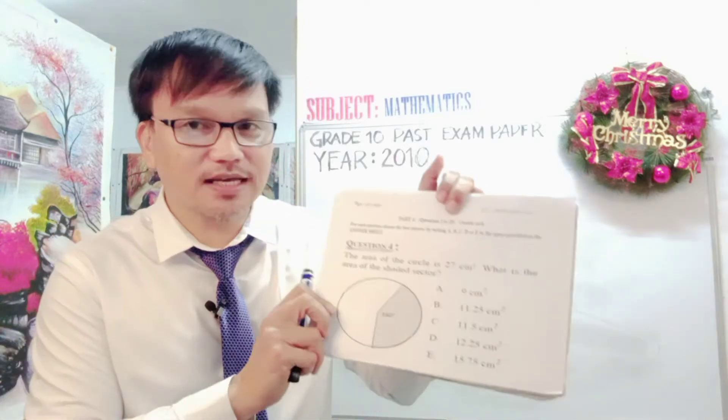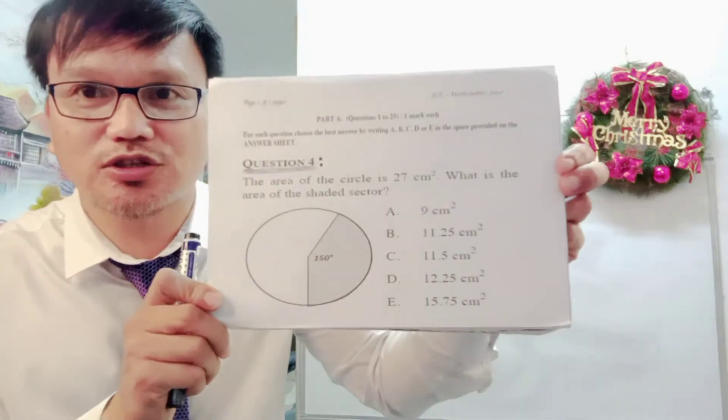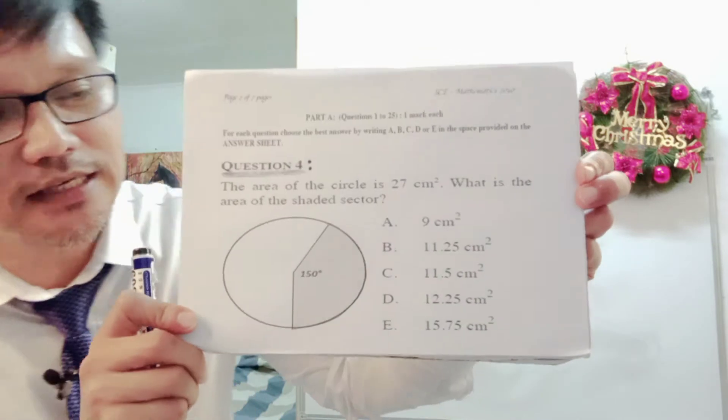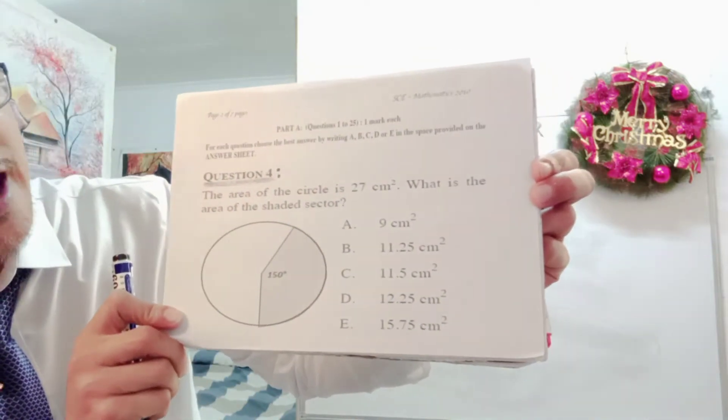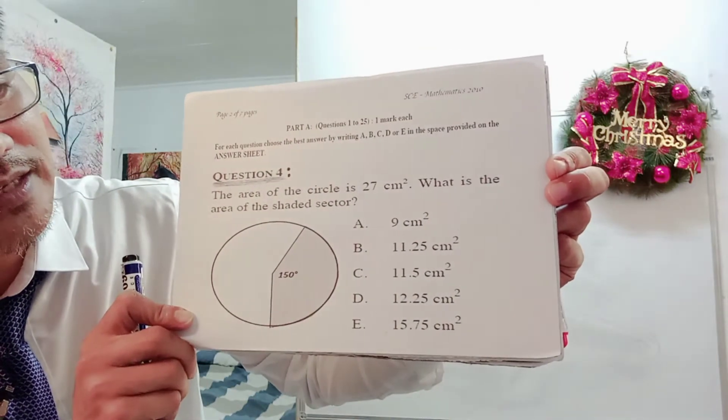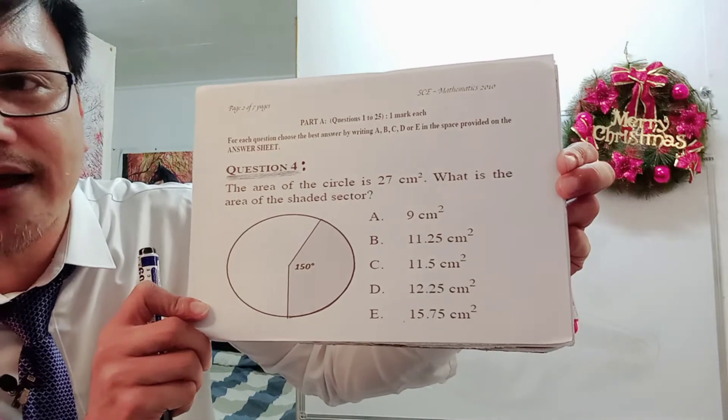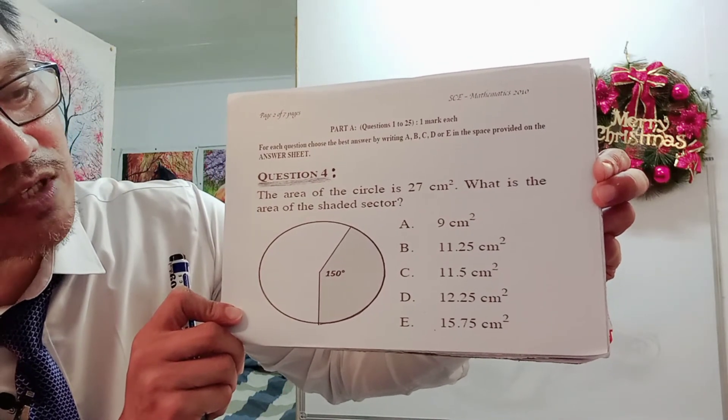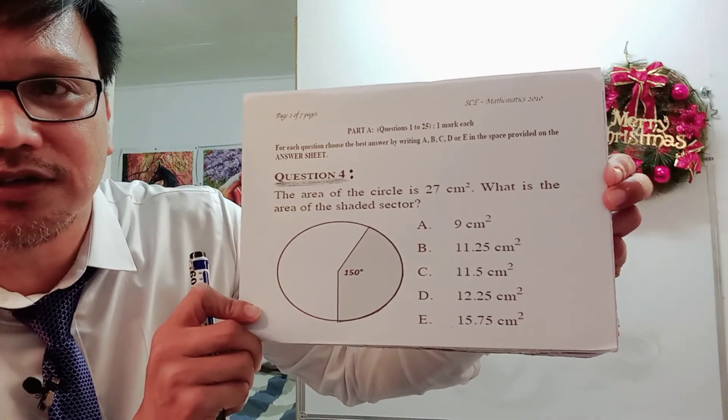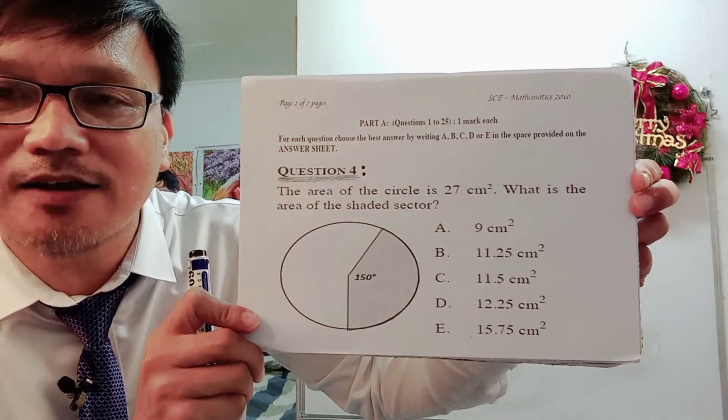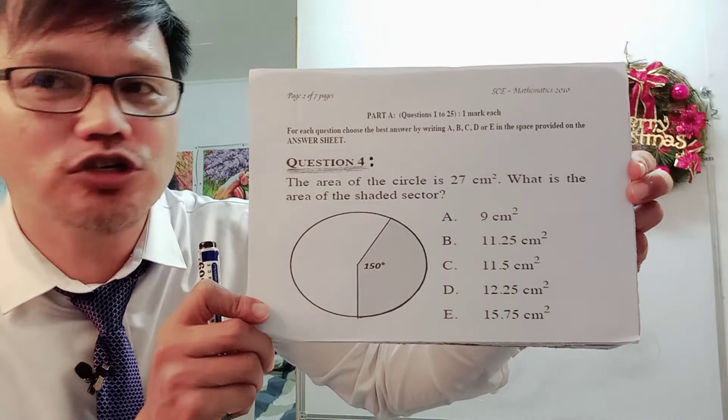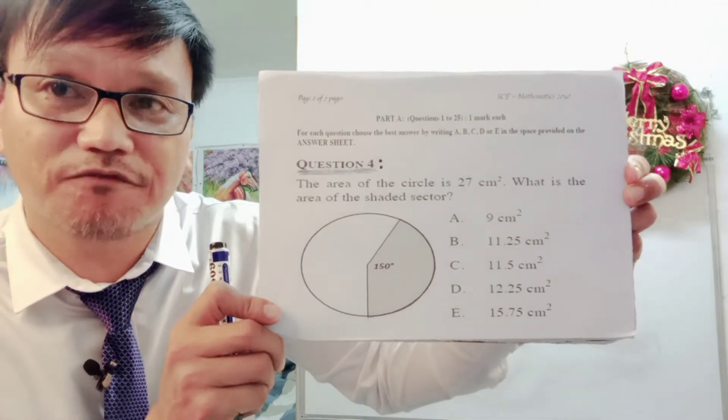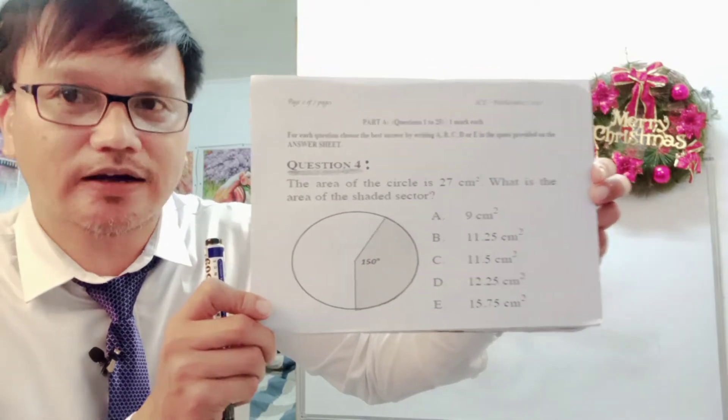So this is question number four. I'll show it to you. The question says here that the area of the circle is 27 square centimeter. What is the area of the shaded sector? In this kind of question, you don't have to panic because we go back to the basic on finding the area of the circle.